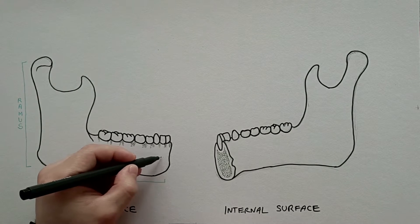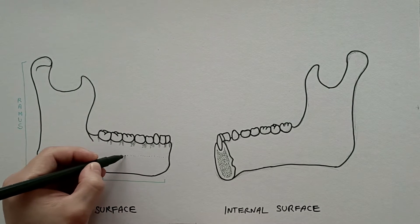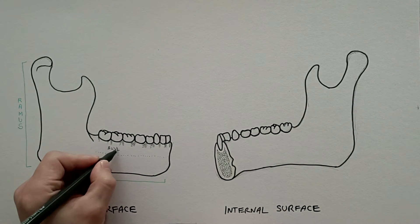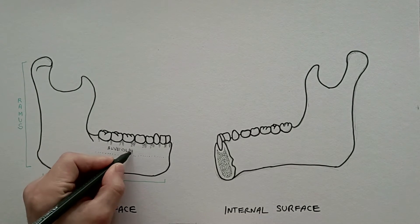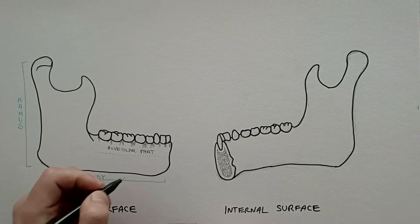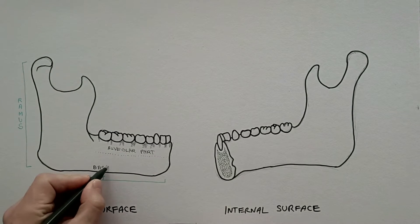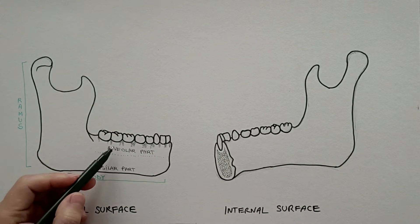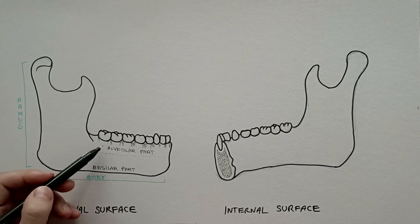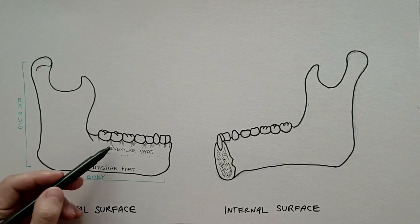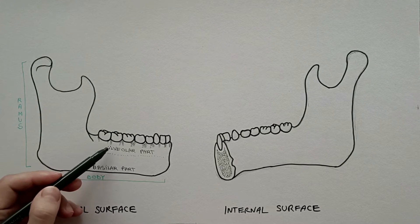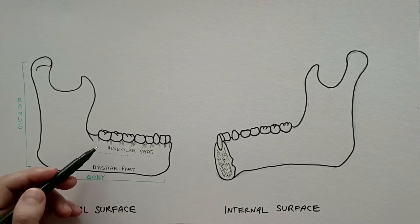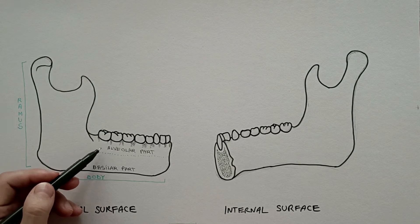The body of the mandible presents also two parts. The upper part is the alveolar part; the inferior part is the basilar part. The alveolar part contains the alveoli for the tooth roots. This is the part that degenerates following the loss of teeth.